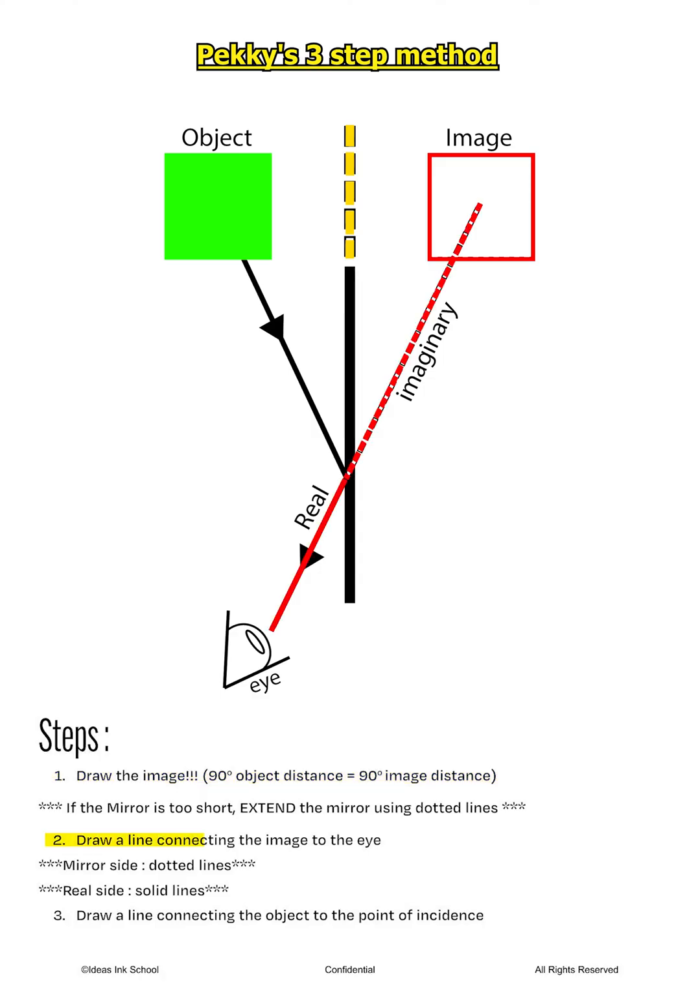Step two, we will draw a line connecting the image to the eye. When doing so, please note that the line on the imaginary side of the mirror must be drawn using dotted lines, while the line shown on the real side must be drawn using solid straight lines. The dotted line is to indicate light appearing to come from the virtual image on the other side of the mirror. This light beam isn't real and is simply an interpretation by our brains.